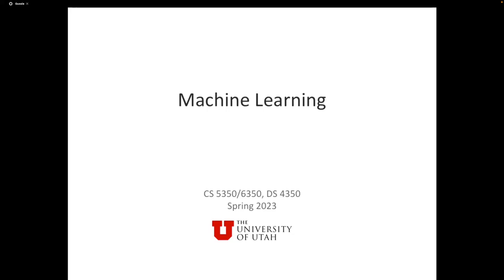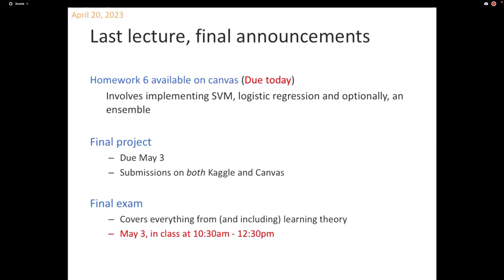Time to begin. For the last time today, a setup announcement. Homework six is available on Canvas and hopefully you're working through it — it may take some time. There's also a late day available. The final project needs to be wrapped up by May 3rd, which is the last day of exams. You can also do May 4th with a 10% penalty. The final project involves submissions to both Canvas and Kaggle.